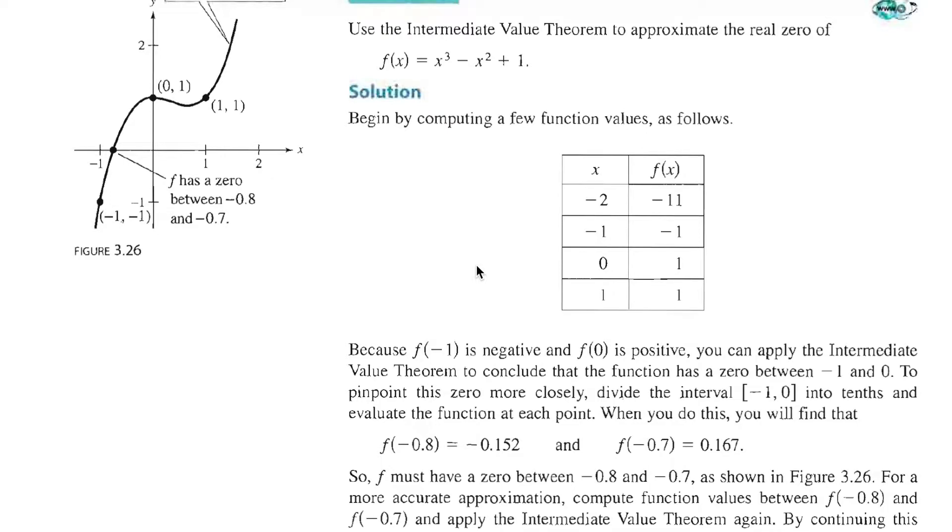We're going to use Example 7 in our book called Approximating a Zero of a Polynomial Function. We're going to use the Intermediate Value Theorem to approximate the real zero of f(x) = x³ - x² + 1.